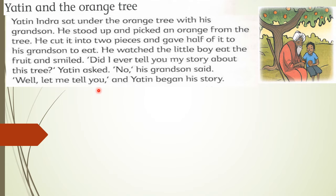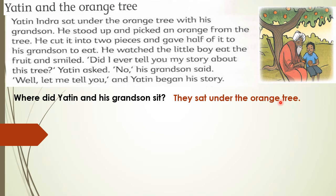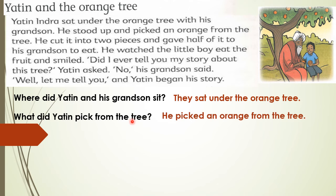Now let's answer some questions. Where did Yatin and his grandson sit? The answer: they sat under the orange tree. Next question: What did Yatin pick from the tree? He picked an orange from the tree.